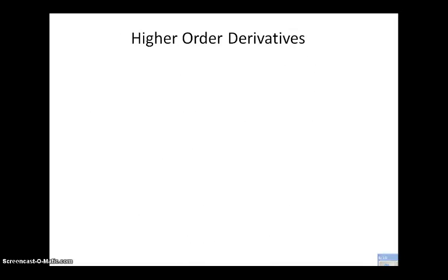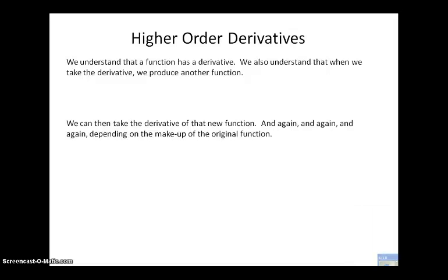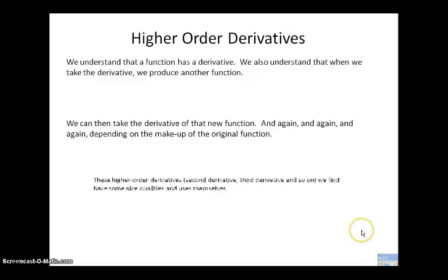Just as we can take the first derivative — and if a function has a derivative we can find it — when we find that derivative the result is another function. The original function f(x) is a function, the derivative function f'(x) is a function. So if we were to take the derivative of the derivative, it should yield us another function. We can take the derivative of the new function again and again and again, depending on the makeup of the original function, and we should always result in another function.